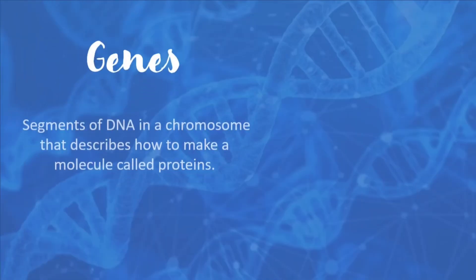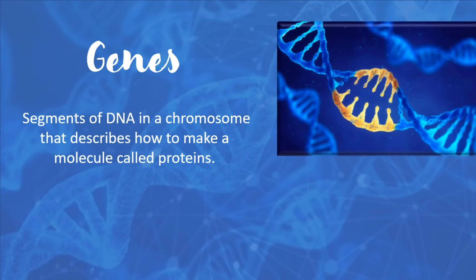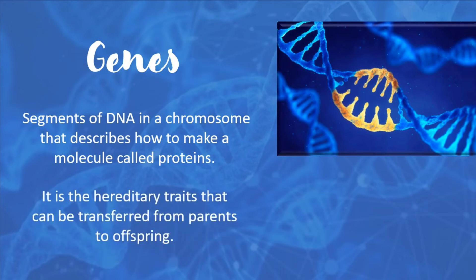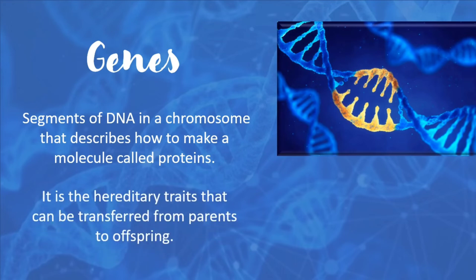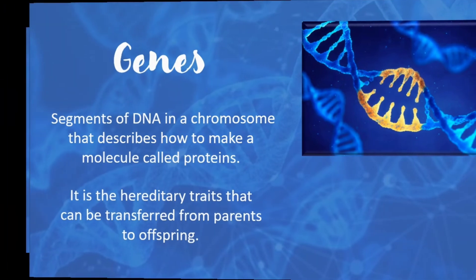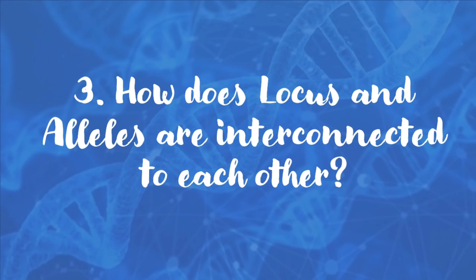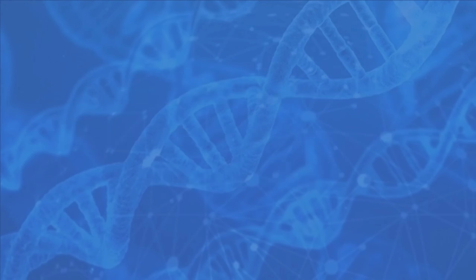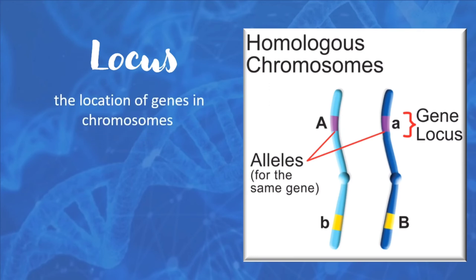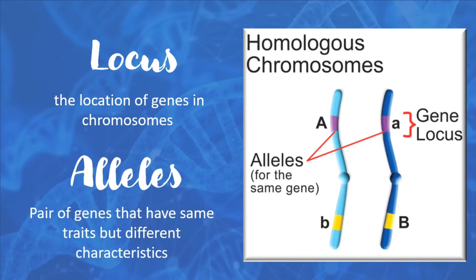Genes are segments of DNA in a chromosome that describe how to make a molecule called proteins. They are the hereditary traits that can be transferred from parents to offspring, and they determine the type of trait a person will have depending on the type of gene which is expressed. Locus is the location of genes in chromosomes, while alleles are pairs of genes that have the same traits but different characteristics.